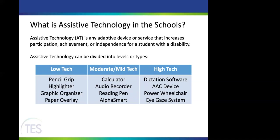One of the first ways to classify assistive technology is by level. You can look at low technology, moderate or mid technology, or high technology. Low technology items are things typically found in most classrooms — things like a pencil grip, a graphic organizer, paper overlay, or even a piece of paper placed over a math worksheet so the student doesn't see as many problems at the same time. Even that piece of paper counts as assistive technology.